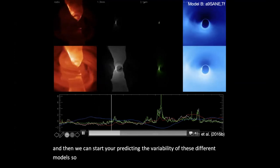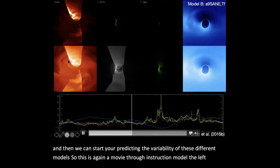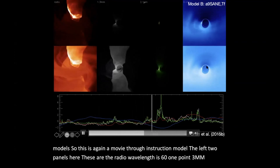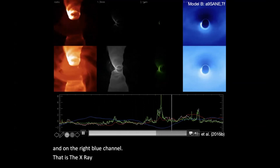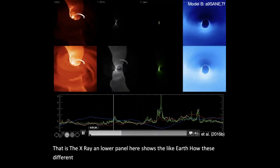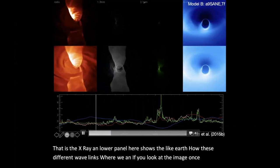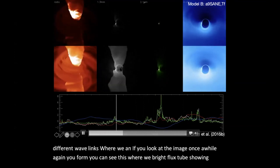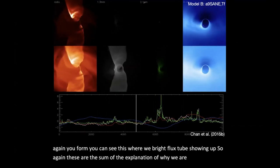So this is again, a movie showing such a model. The left two panels here, these are the radio wavelengths. This is the 1.3 millimeter optical, and on the right, the blue channel, that is the x-ray. And the lower panel here shows the light curve, how these different wavelengths vary. And if you look at the image, once in a while, again, you can see this very bright flux tube showing up. So again, these are some of the explanation of why we are seeing flares in these black holes.